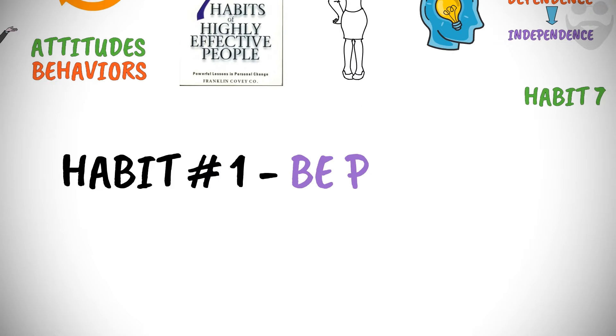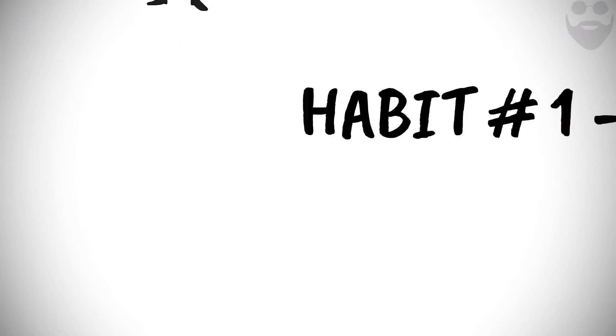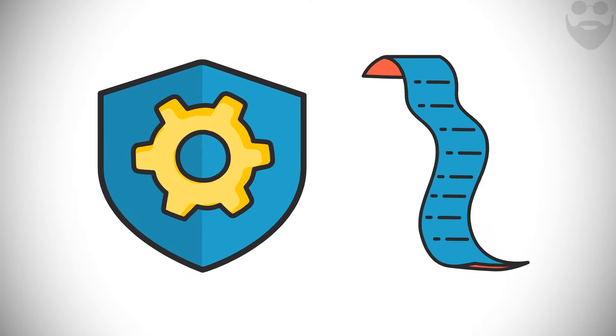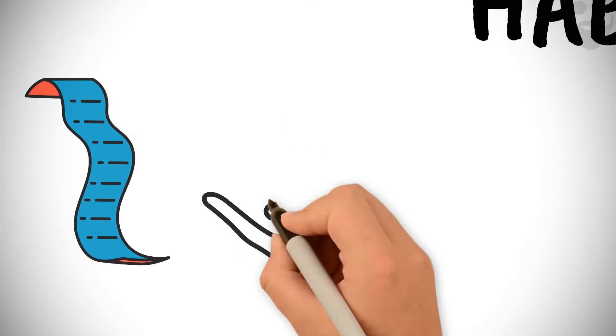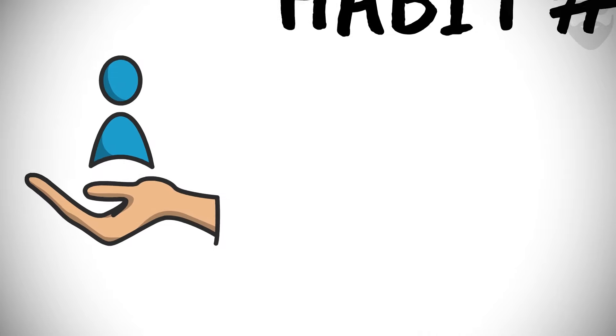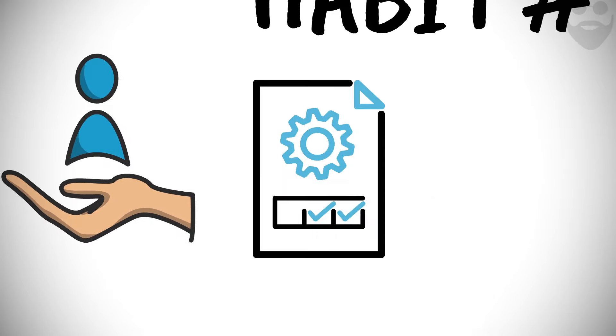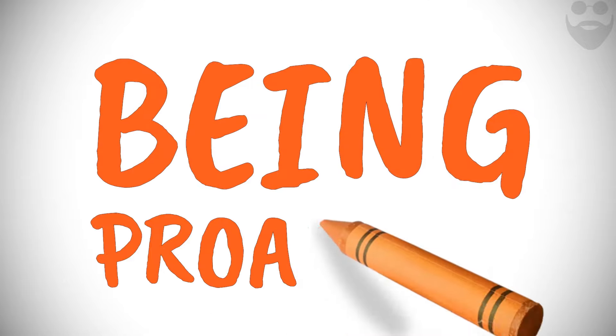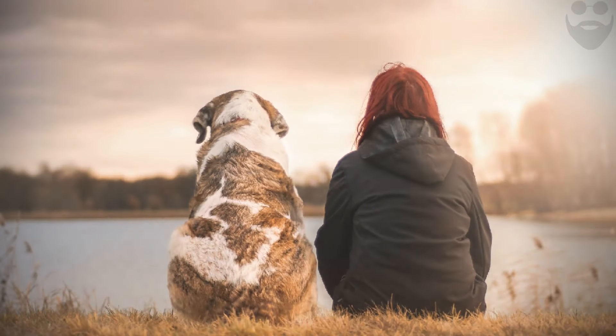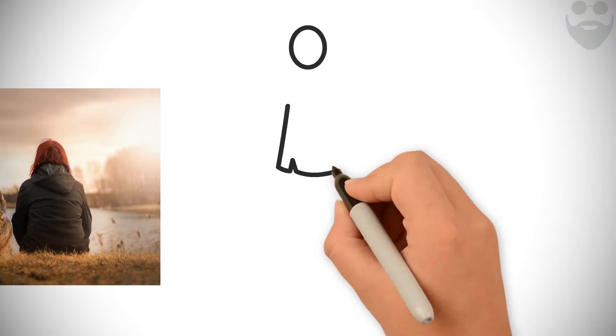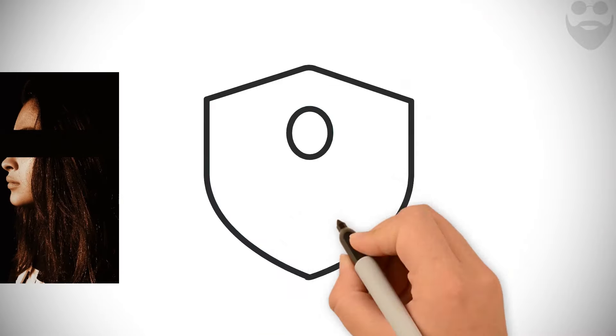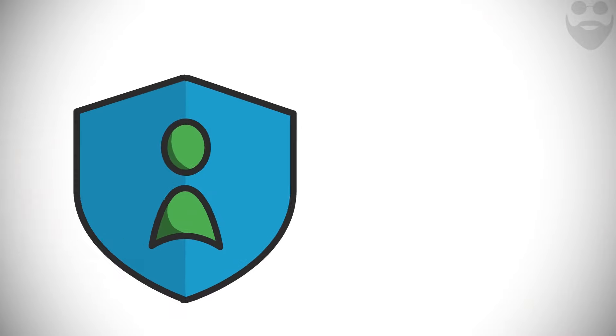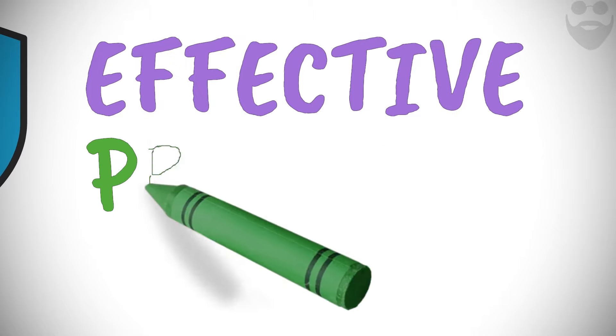Habit 1: Be proactive. We're in charge. We choose the scripts by which to live our lives. Use this self-awareness to be proactive and take responsibility for your choices. The first of seven effective habits that Stephen Covey discusses is being proactive. What distinguishes us as humans from all other animals is our inherent ability to examine our own character, to decide how to view ourselves and our situations, and to control our own effectiveness. Put simply, in order to be effective, one must be proactive.